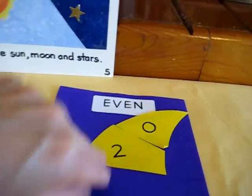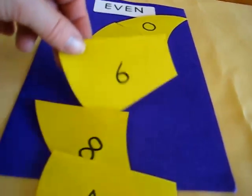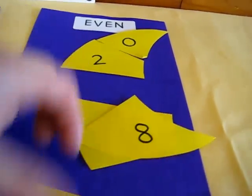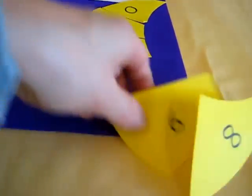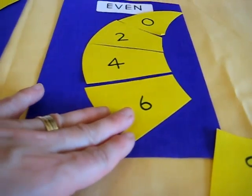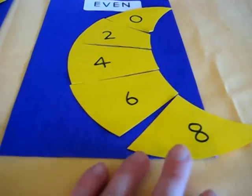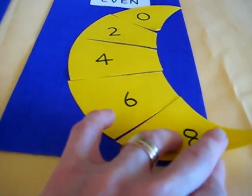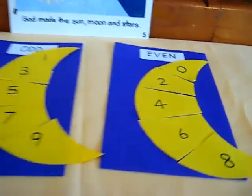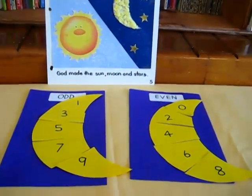So this was a fun little game for our day four of creation and great for a little math practice. Very simple to make. You just get a purple or dark blue paper and some yellow paper. You need a marker and some scissors. And there you have your little odd and even game. Have fun with your little preschooler.